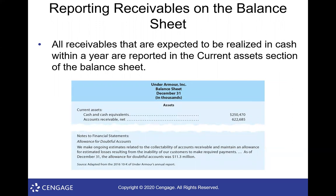On the balance sheet, accounts receivable and notes receivable are current assets. Notes receivable due within the next year are listed as current assets; those due more than a year from now are listed as long-term or non-current assets. For installment notes, part may be due within the next year and the rest later, so it's common to see a 'current portion of long-term notes' in current assets and the remainder in the long-term section.